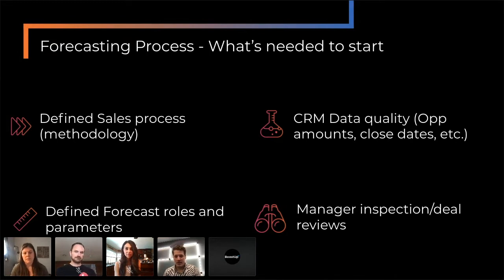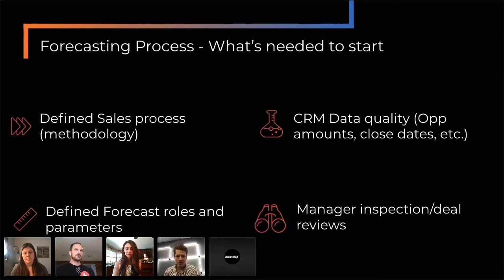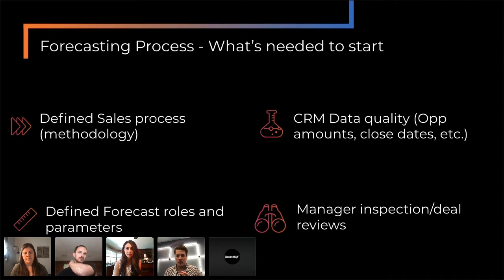The last thing is deal reviews and inspection. If you have a bunch of pipeline that is not being inspected on a regular basis, my guess is — it goes back to my first point — you won't have good quality data and therefore you won't be able to forecast. To me, those four things: if you don't have those four or they're not pretty robust, start there, because all else you talk about won't be useful.